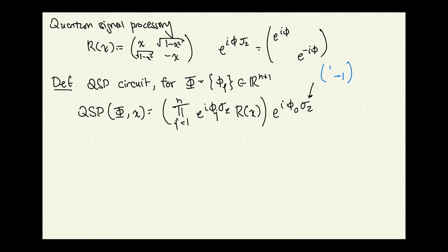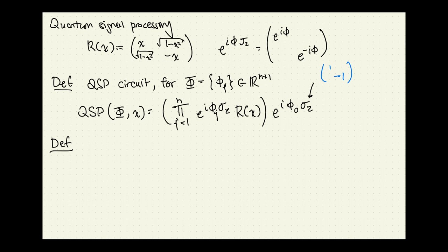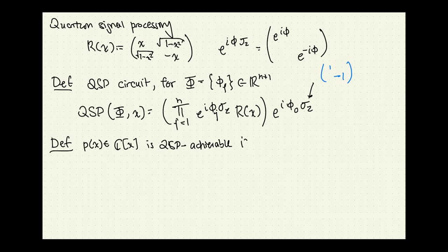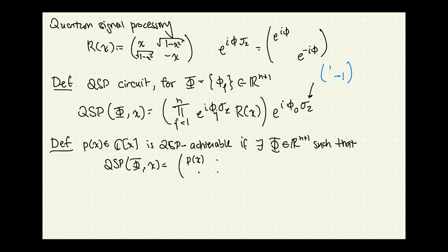We're imagining the product as going from n on the left-hand side to 1 on the right-hand side. The question is what you can achieve with these sorts of circuits. Based on this, we say that a polynomial is QSP achievable if there exist some phase factors such that the corresponding circuit gives something with P(x) in the top left corner. We want to figure out which kinds of polynomials are QSP achievable.